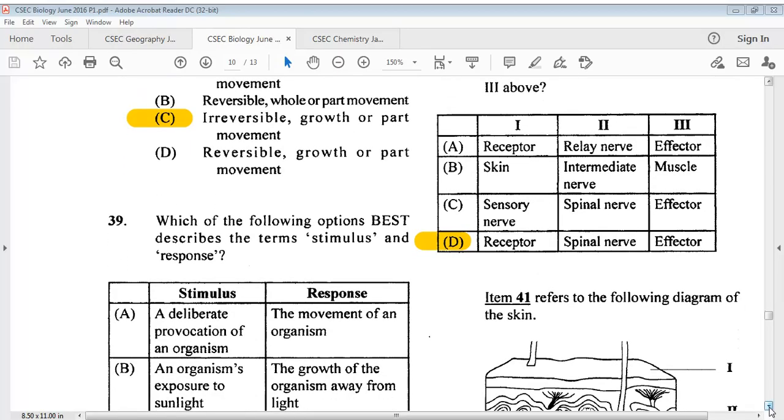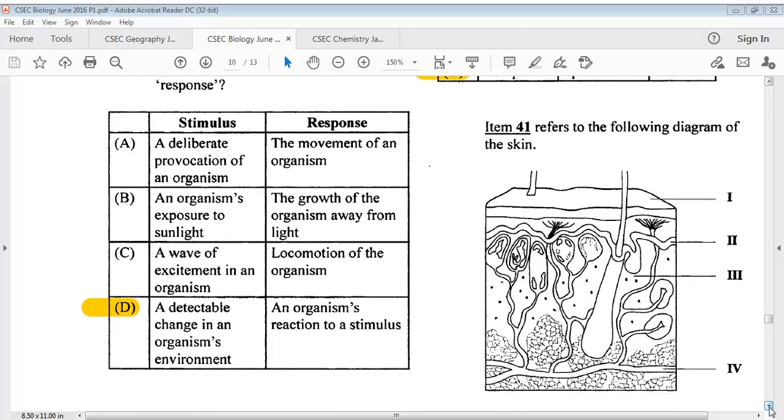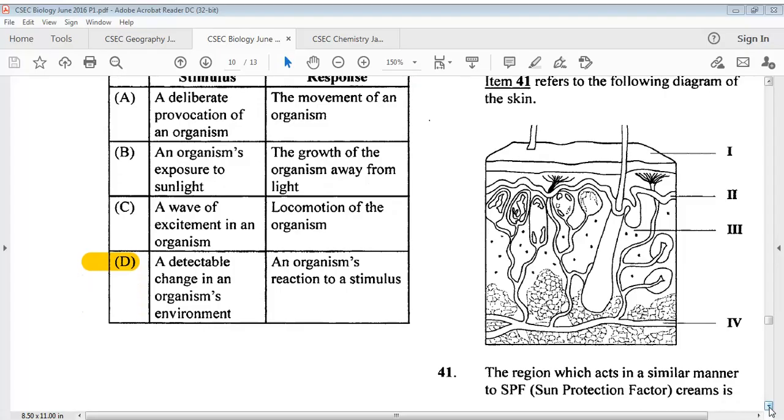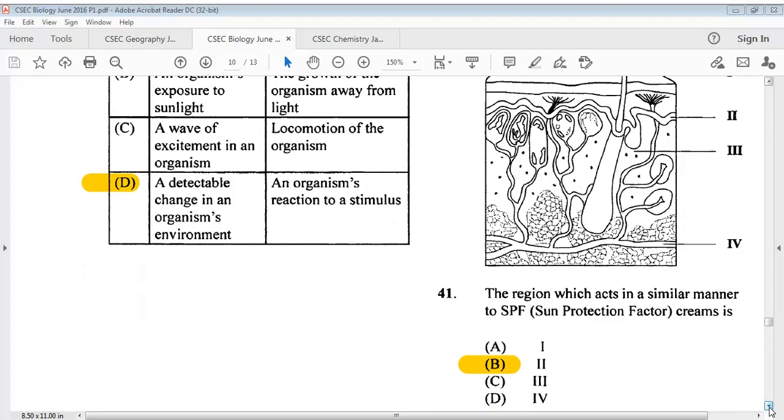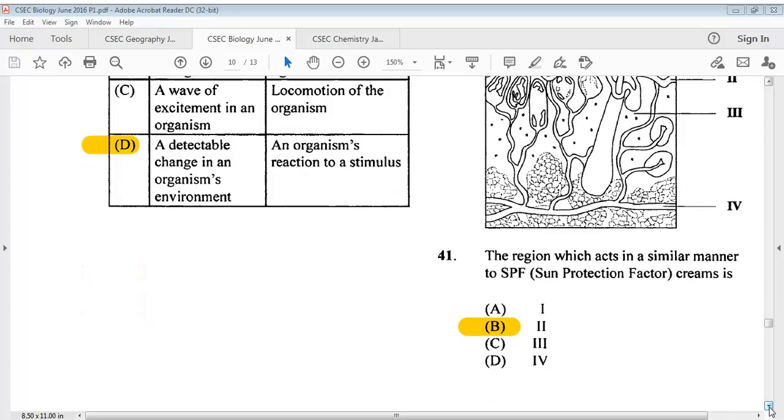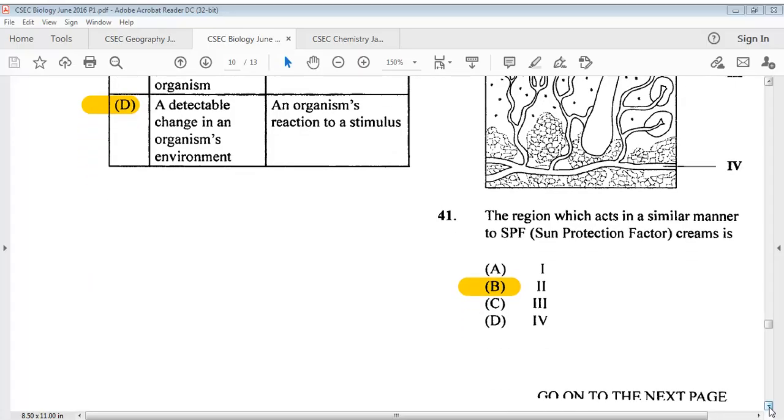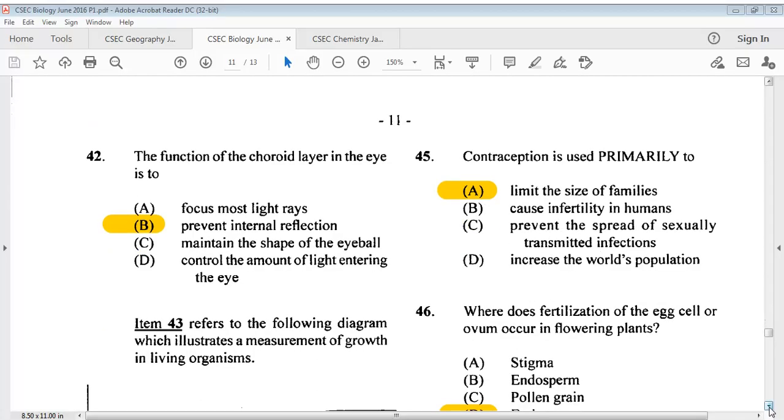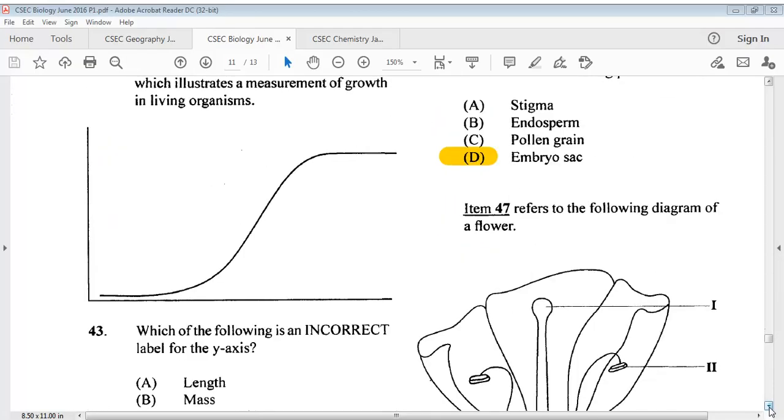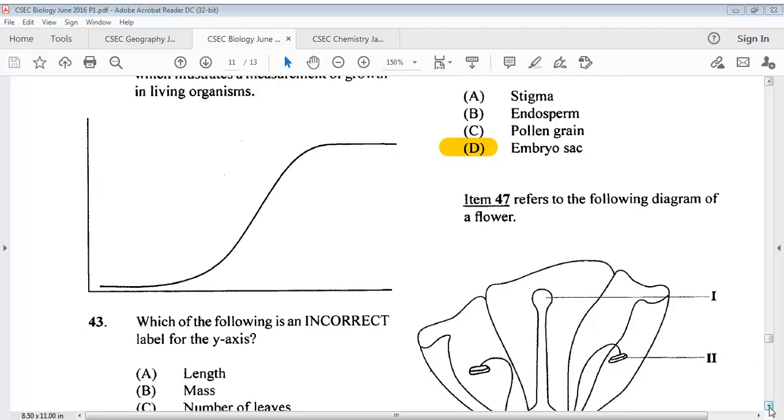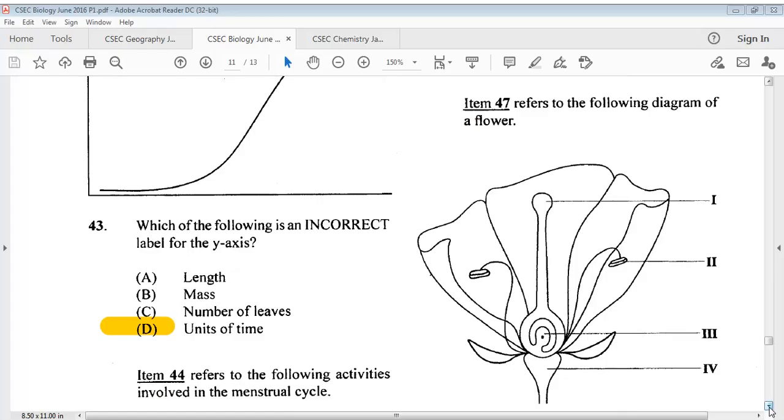For item 41, we have the diagram of a skin and we're given four parts. The answer is B. Question 42, the function of the choroid layer in the eye tube. The answer is B, prevent internal reflection. Question 43 refers to the following diagram which illustrates a measurement of growth in living organisms. Which of the following is an incorrect label for the y-axis? The answer is D, units of time.